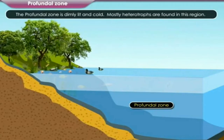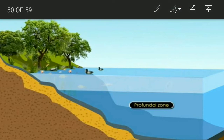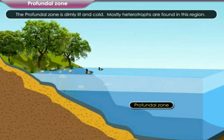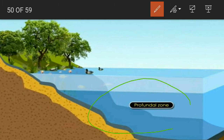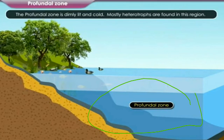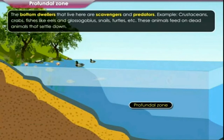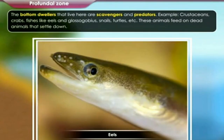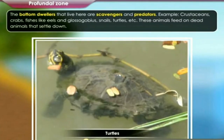The third one is the profundal zone. The profundal zone is dimly lit and cold — we also call this a dark zone. Since there is no light, no producers exist in this zone. Mostly heterotrophs are found here. The bottom dwellers that live here are scavengers and predators. Examples are crustaceans, crabs, fish like eels and Glossogobius, snails, turtles, etc. These animals feed on dead organisms that settle down from both the littoral and limnetic zones, and also from the profundal zone itself.